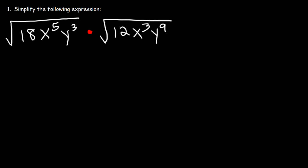Number 1. Simplify the following expression. The square root of 18, we can write it as root 2 times root 9.